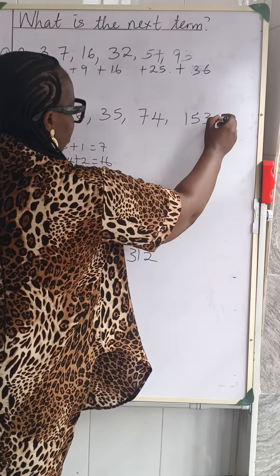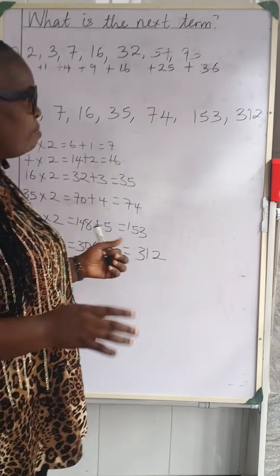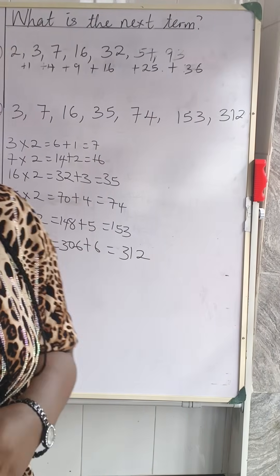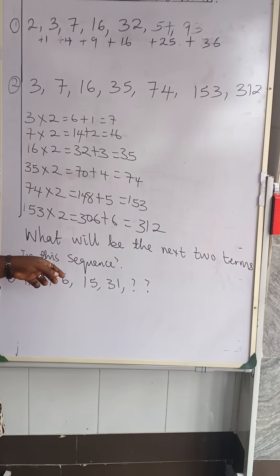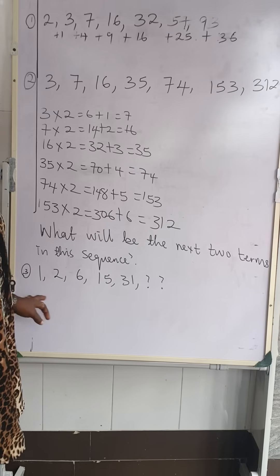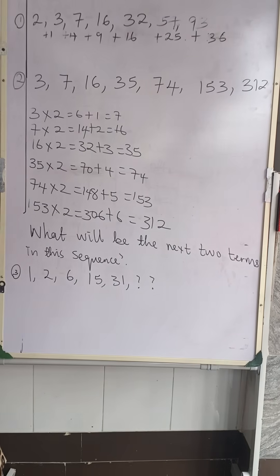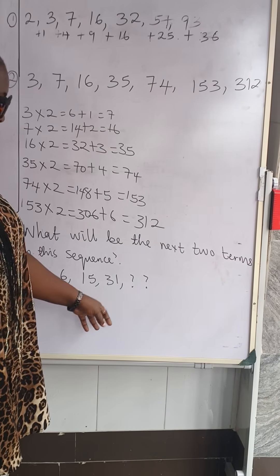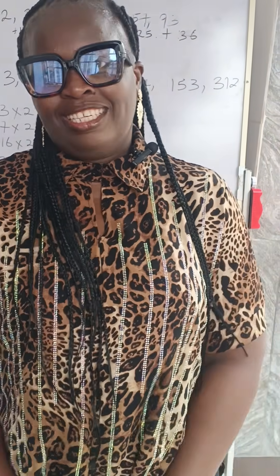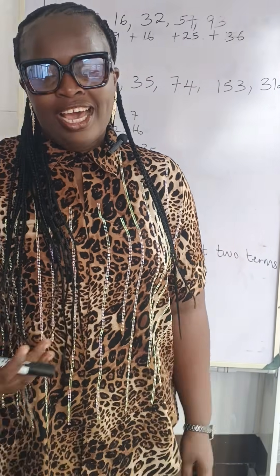That is how you do it. I'm not going to leave you empty-handed — I'm giving you number three to solve and I want to see your answers in the comments. Number three: what will be the next two terms in this sequence? The sequence is: 1, 2, 6, 15, 31 — find the next two question marks. Hope you enjoyed today's class! See you in subsequent classes, give us a thumbs up, and share our video.